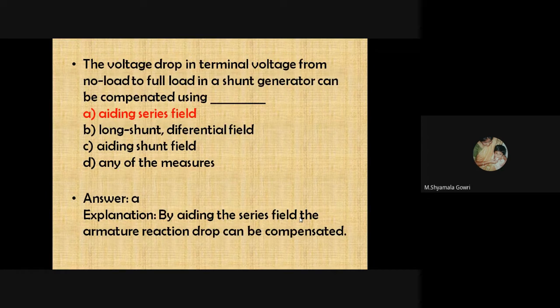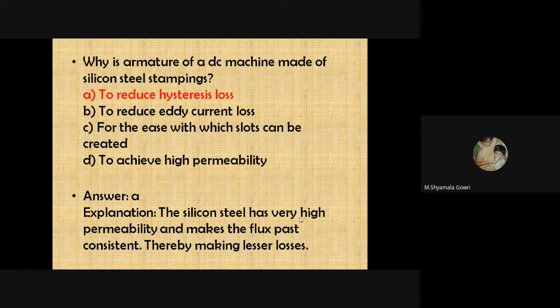The voltage drop in terminal voltage from no-load to full load in a shunt generator can be compensated using an aiding series field. By adding a series field to the shunt generator, the armature reaction drop can be compensated. The armature of a DC machine is made of silicon steel stampings mainly to reduce hysteresis loss, because silicon steel has very high permeability, making the flux path consistent and thereby producing lesser losses.